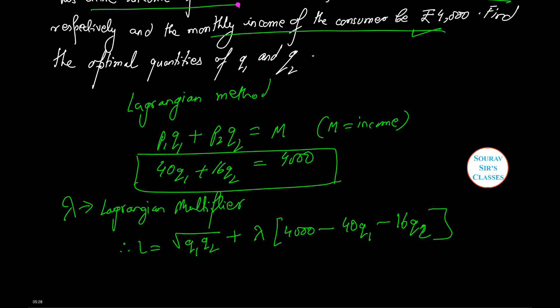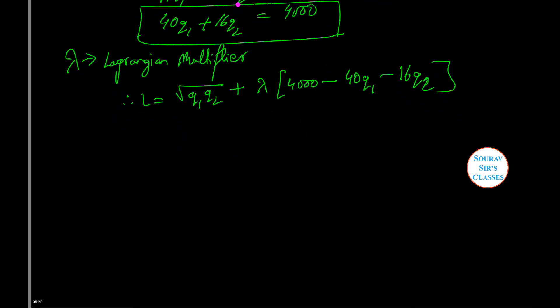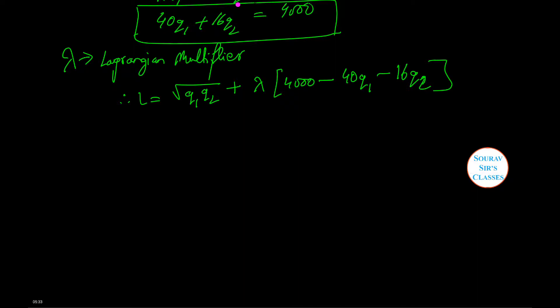Thus the Lagrange function is L equals root over Q1 Q2, which was the given consumer utility function, plus lambda times the budget constraint. We differentiate this L with respect to Q1, Q2, and lambda.